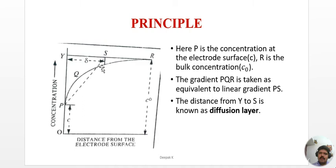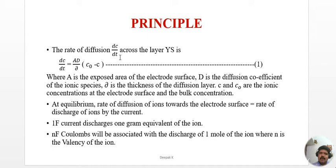The rate of diffusion dc/dt across the diffusion layer Y-S is given by: dc/dt = AD/δ(C0 − C), where A is the exposed area of the electrode surface, D is the diffusion coefficient, δ is the thickness of the diffusion layer, C is the ionic concentration at the electrode surface, and C0 is the bulk concentration.